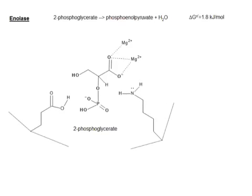The second to last reaction of glycolysis is mediated by the enzyme enolase. Enolase is an enzyme that makes an enol out of 2-phosphoglycerate.